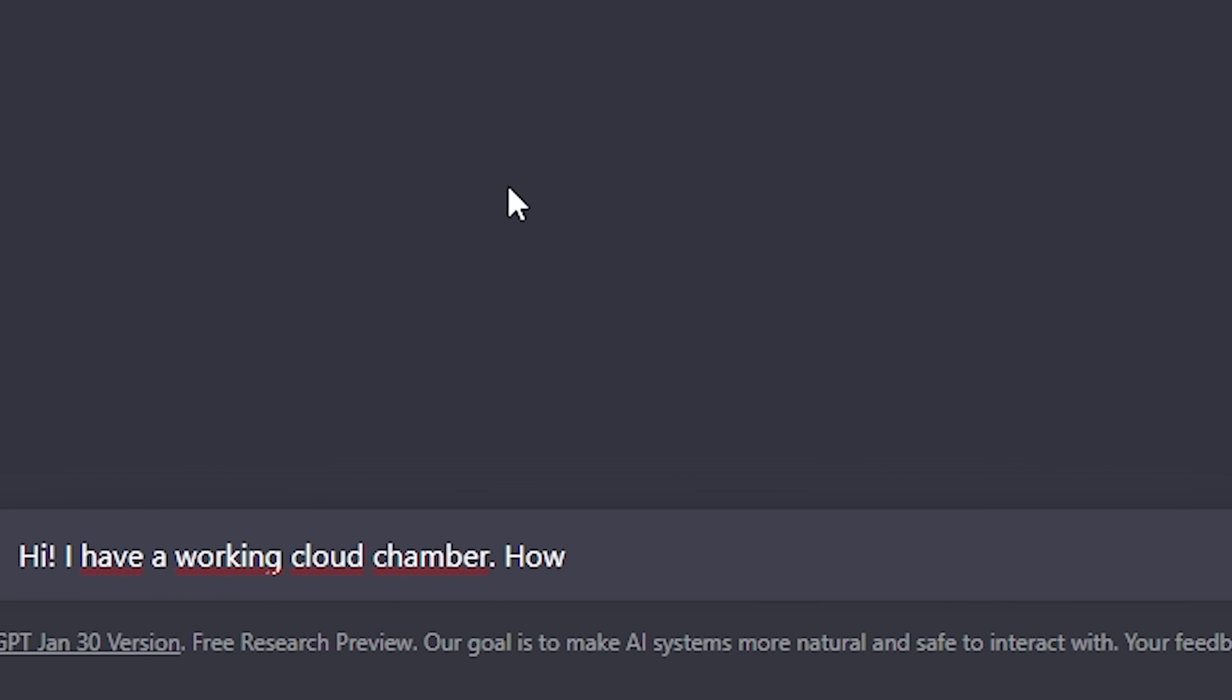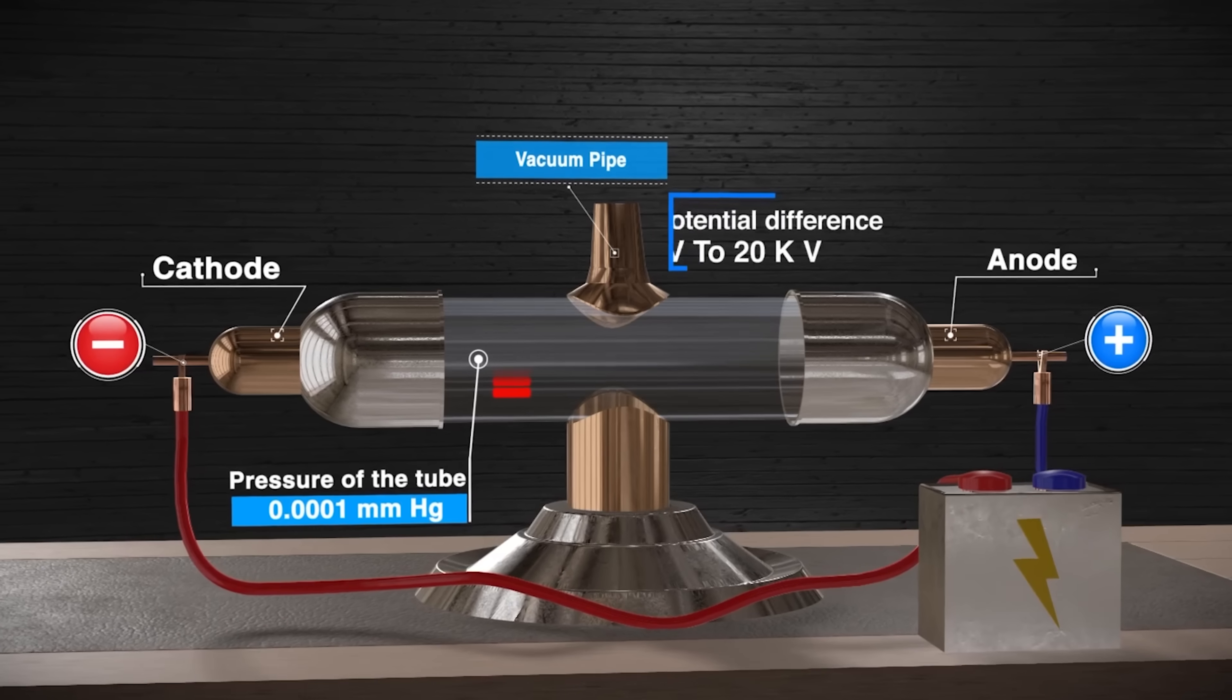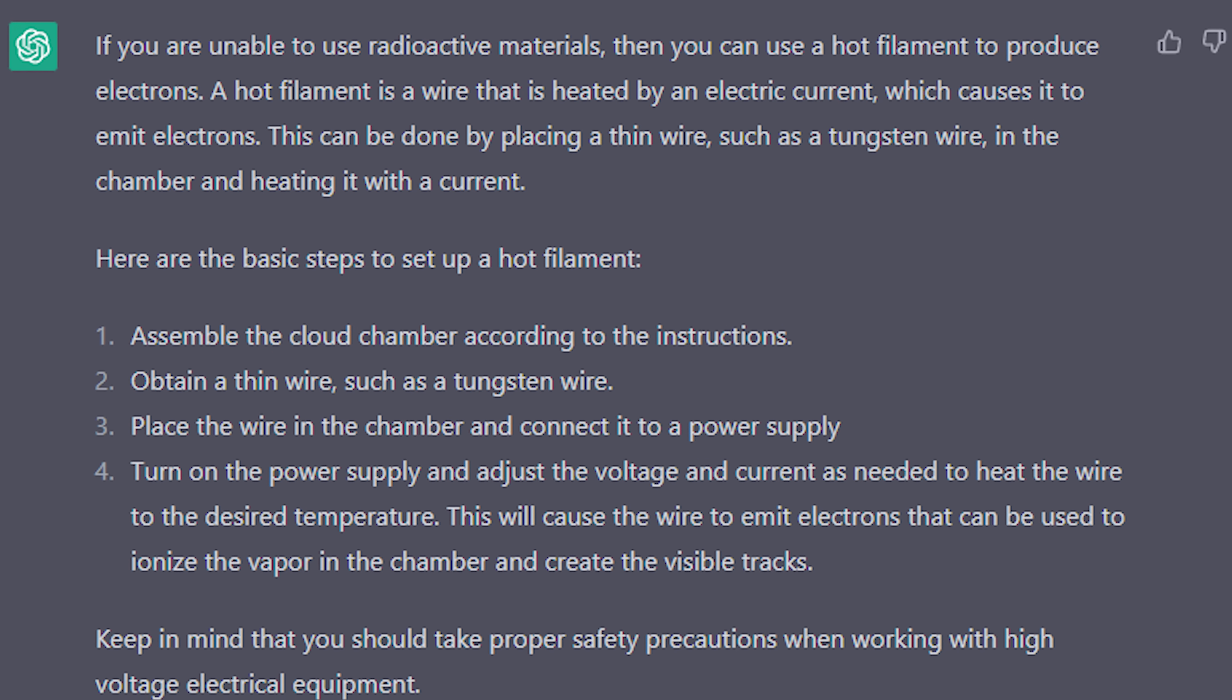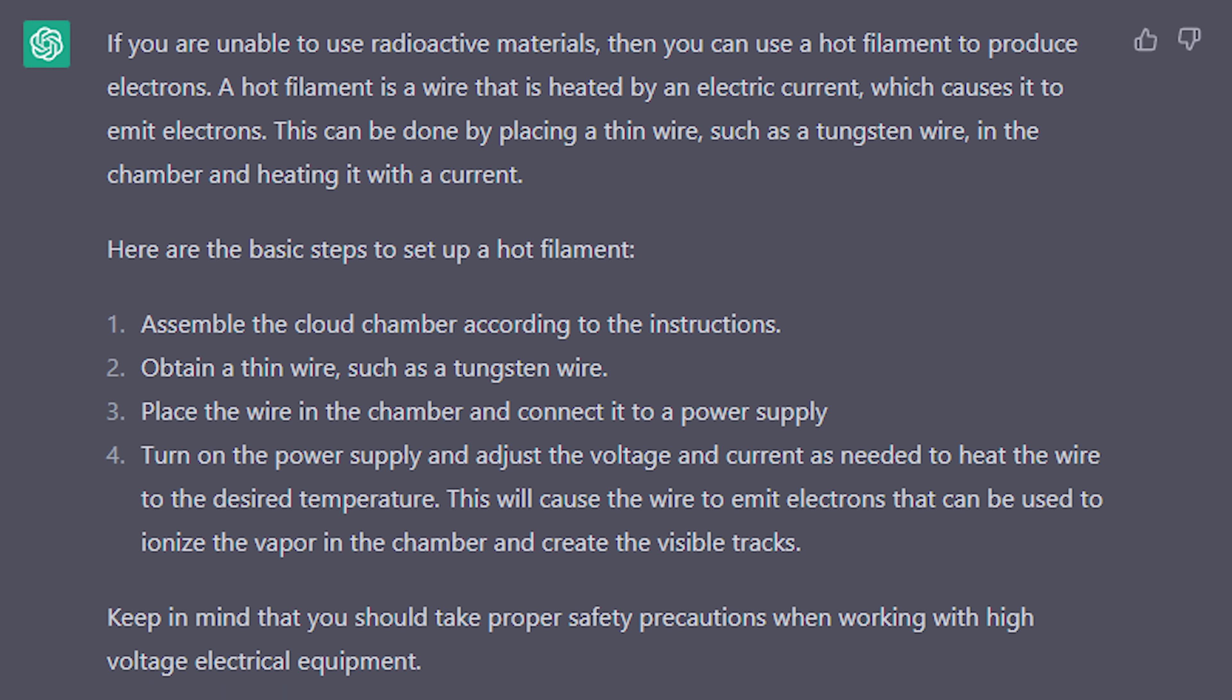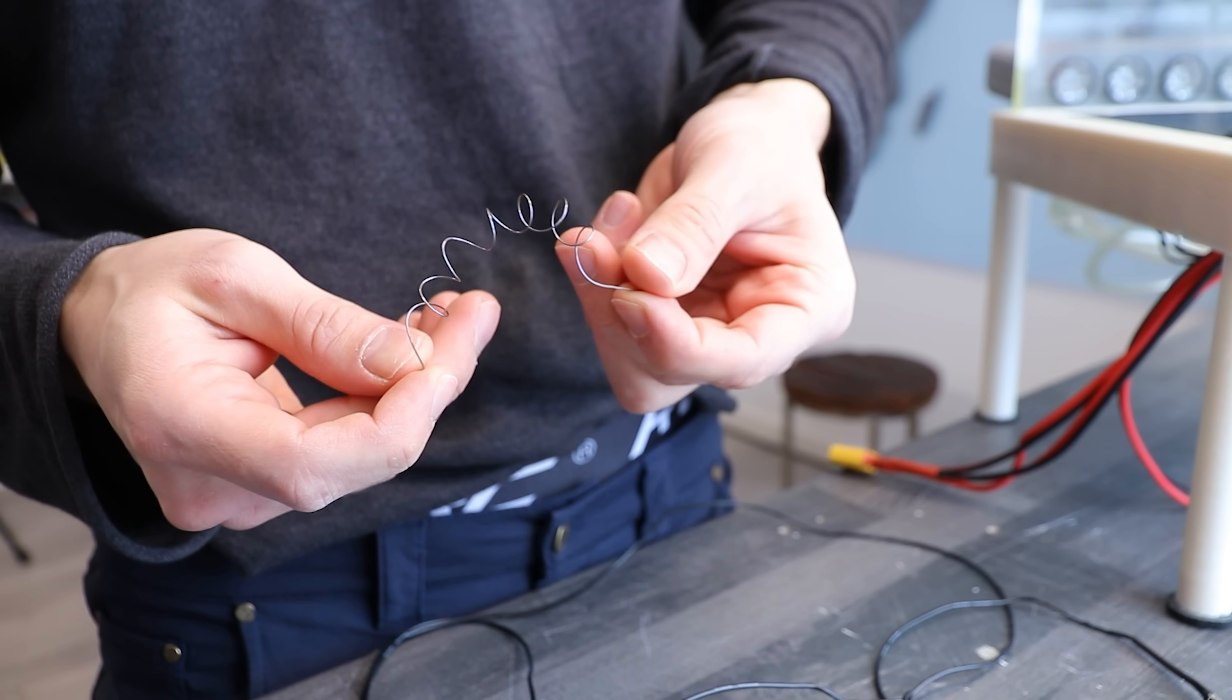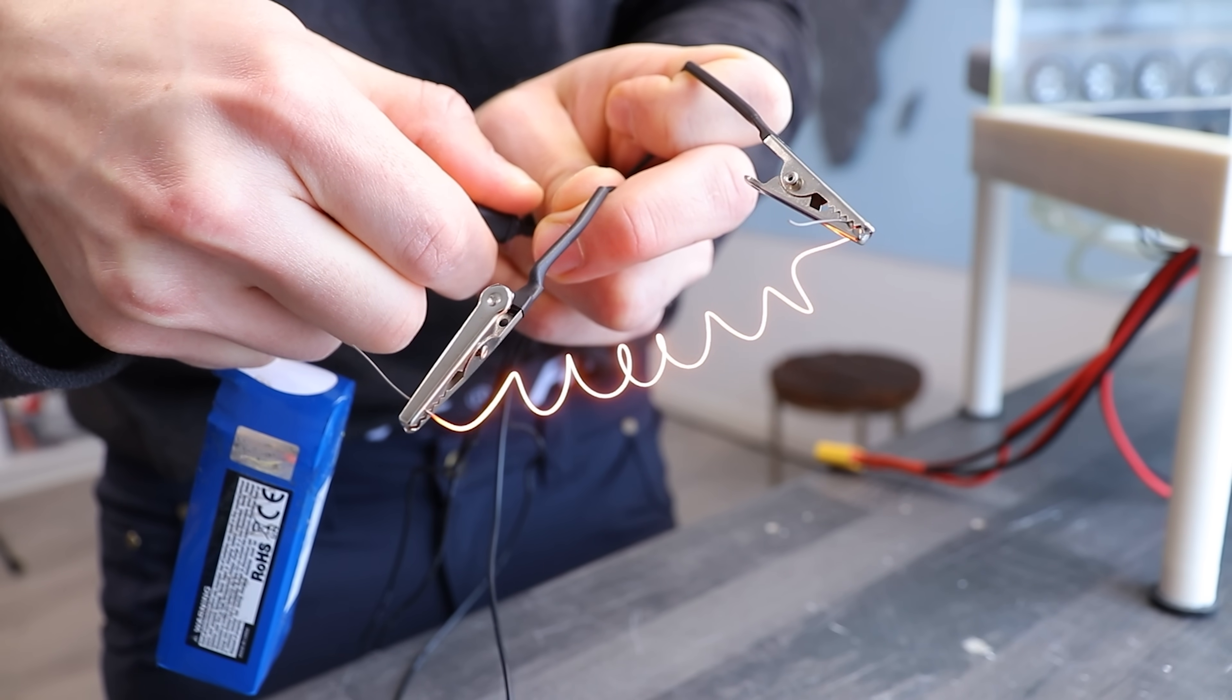So I went to ChatGPT and asked how I could shoot electrons through the chamber without using any radioactives or building a cathode ray tube. It came up with an answer that I hadn't thought about and that was using a hot wire to release electrons. So I made this out of kanthal wire and connected the battery to each end. And this is what happened the first time I used it.